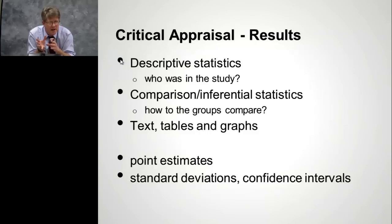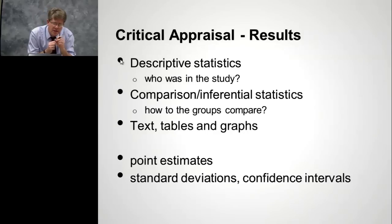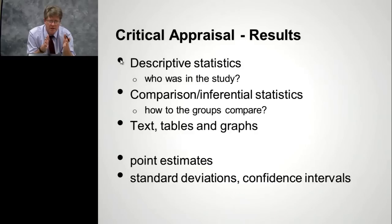A lot of results are buried in text sometimes, not always represented in tables, and some results are only represented in the tables and not in text. So in the results section, you actually have to read through pretty carefully to understand where the results are. You'll see point estimates, which are the specific statistics like a relative risk. And when you look at statistical significance, you'll see standard deviations — measures of error in your estimate. You'll see confidence intervals, which are another way to express error or a range of possibilities for your point estimates.